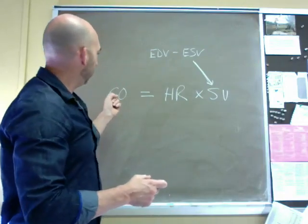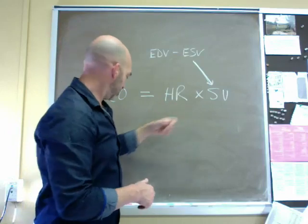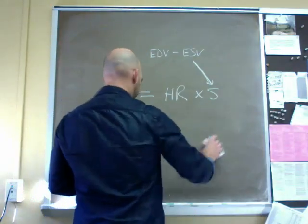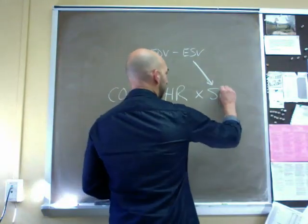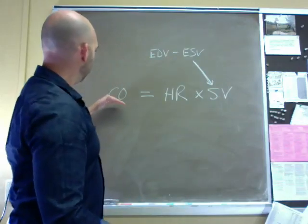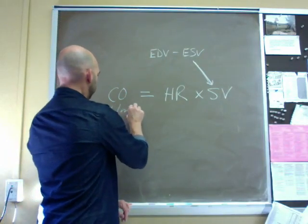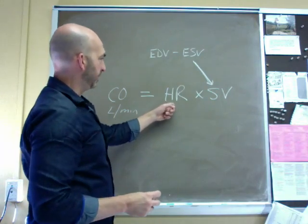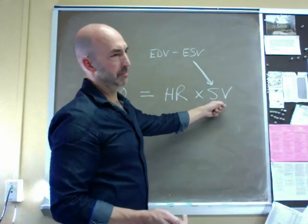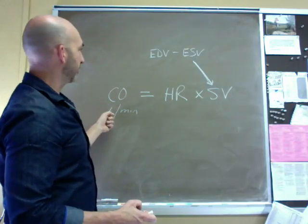So there's a relationship between changes in heart rate and stroke volume, and how they correlate with changes in cardiac output, usually measured in liters per minute. Heart rate is in beats per minute, stroke volume is usually measured in milliliters, which of course we can convert to liters.